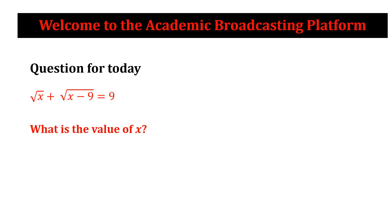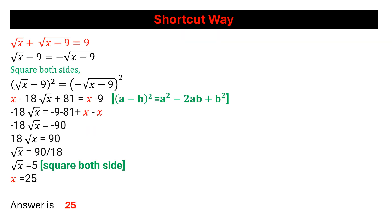Before starting, we need to think for a few seconds about how we can solve this math in a shortcut way. If we bring 9 to the left side and root x minus 9 to the right side, then it will be easier to solve. Then we can do the square on the left side and at the right side.